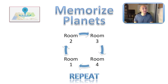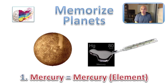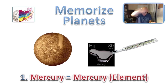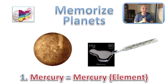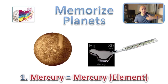Now let's memorize the planets by storing images on each location. For Mercury, picture the element mercury — the kind you find in thermometers. On your first location, maybe it's really hot, so you put a thermometer there and it breaks, and all this mercury comes dripping down. Picture mercury on that first location — maybe you're just pouring it all over. Don't actually do that; it's very dangerous and toxic. But use that visual trigger to remember the first planet is Mercury.